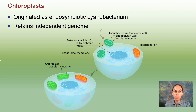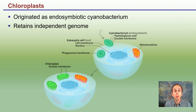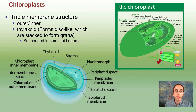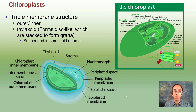Chloroplasts originate as endosymbiotic cyanobacteria. They retain their own independent genome, and there's evidence to suggest they may have once been free-living. Through the endosymbiotic theory, they are now components of plant cells. They have a triple membrane structure — an outer and an inner membrane — which is part of the reason the theory holds that they may have once been free-living.